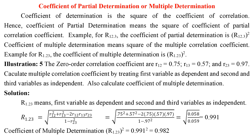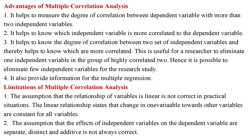For example, for r12.3, the coefficient of partial determination is (r12.3)². Coefficient of multiple determination means the square of the multiple correlation coefficient — for r1.23, it is (r1.23)². Illustration 5: Given r12 = 0.75, r13 = 0.57, and r23 = 0.97, calculate the multiple correlation coefficient treating the first variable as dependent. The result r1.23 = 0.991, and the coefficient of multiple determination (r1.23)² = 0.982.